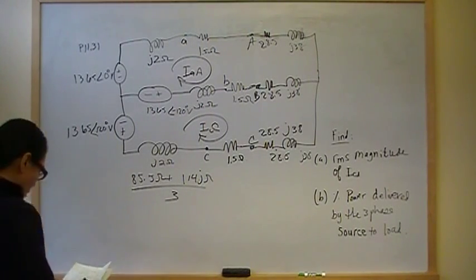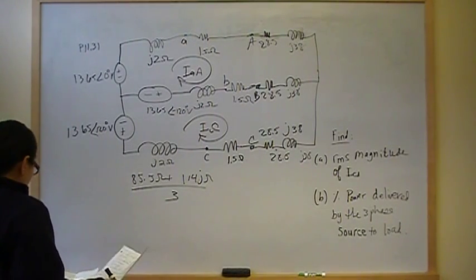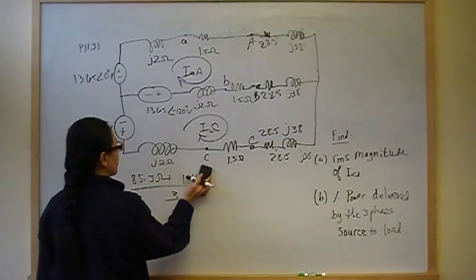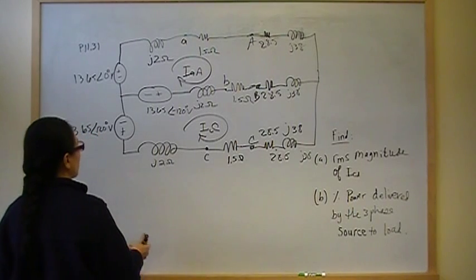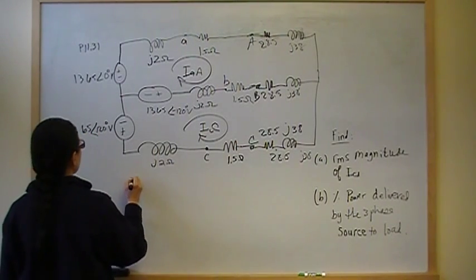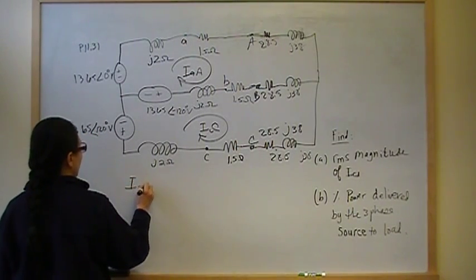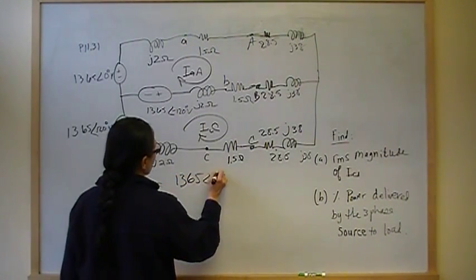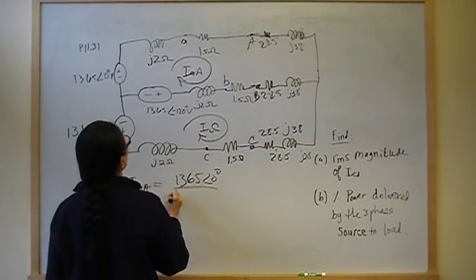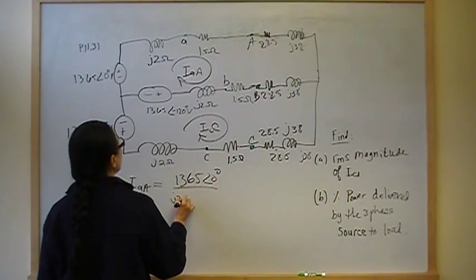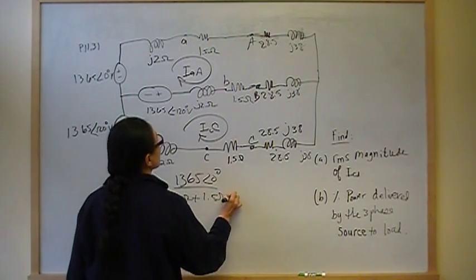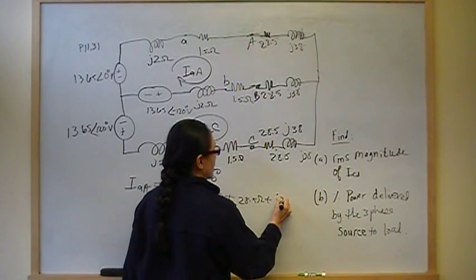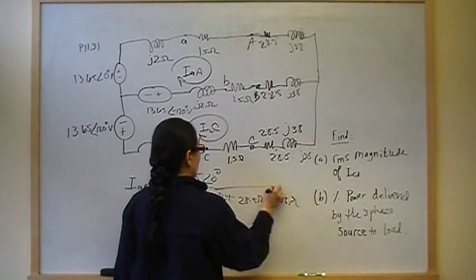Okay, so now we're going to find those two line currents. It's just straight utilization of Ohm's law, voltage over Z, voltage over impedance. So IAA is going to be 1365 angle zero over total impedance of J2 ohms plus 1.5 ohms plus 28.5 ohms plus J38 ohms. When you do that, you should come up with a line current value of 27.3 angle negative 53.13 amps.